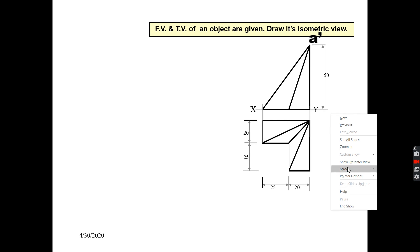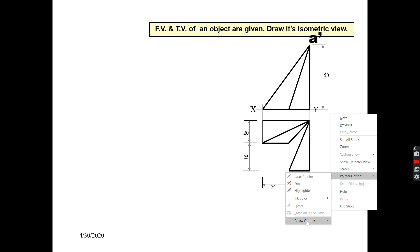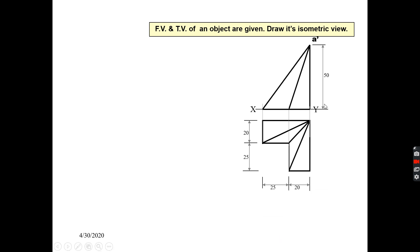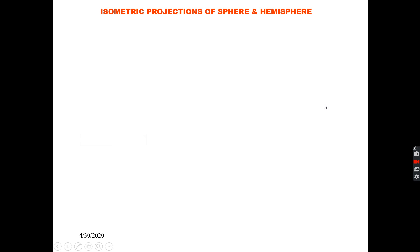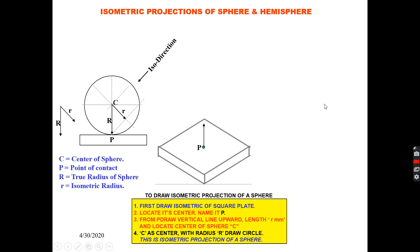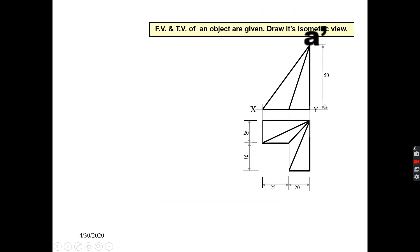In this question, the front view and top view of an object is given to you and you need to draw the isometric view of this object.